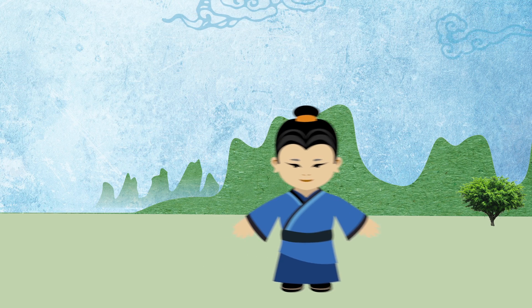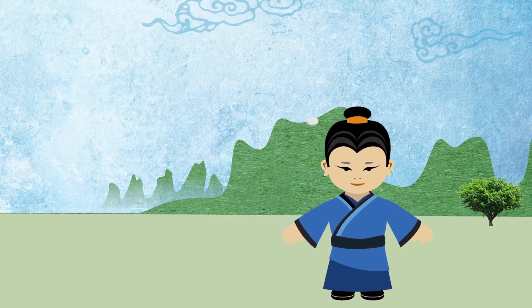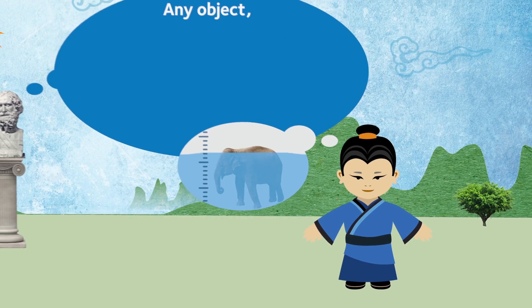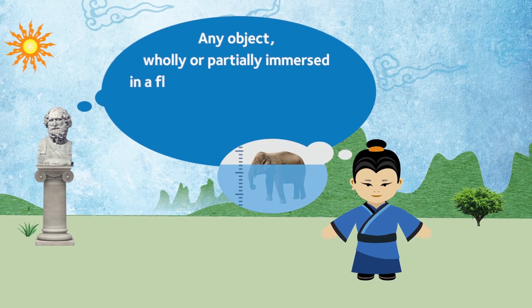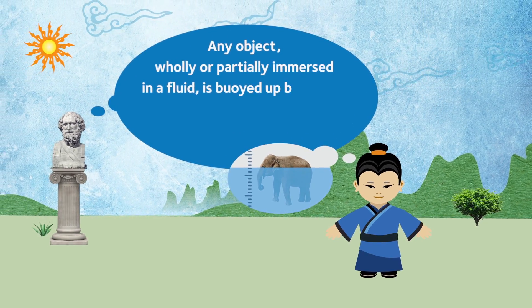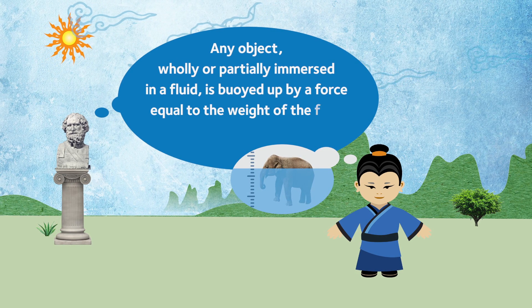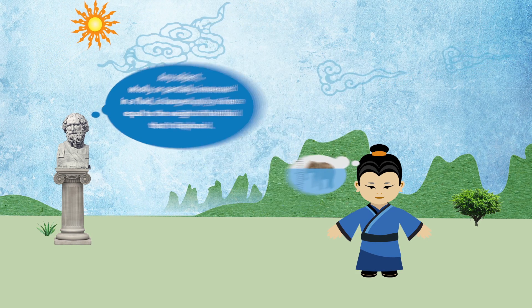Chow Chow had the bright idea of applying the principle of buoyancy: any object wholly or partially immersed in a fluid is buoyed up by a force equal to the weight of the fluid that it displaced.